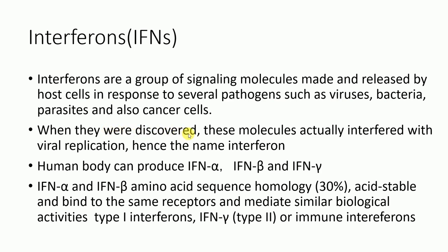Our human body can produce three different types of interferon: interferon alpha, interferon beta, and interferon gamma. Interferon alpha and interferon beta share significantly high sequence homology — they are both acid-stable, bind to the same receptors, and mediate similar biological functions, hence they are called type 1 interferons. However, interferon gamma is different from alpha and beta, and is called type 2 interferon, or immune interferon.